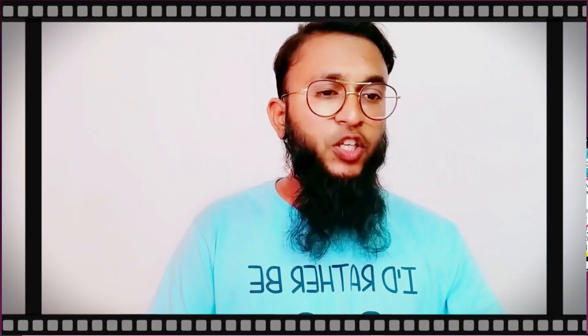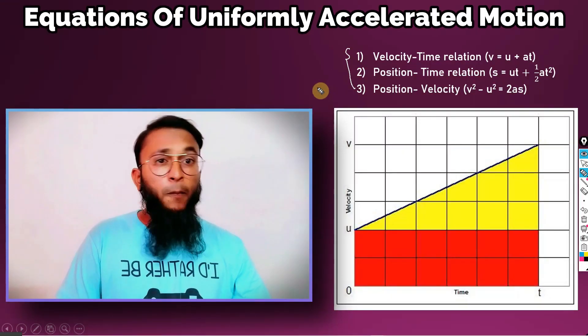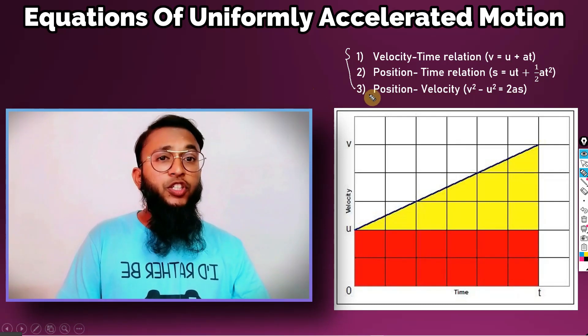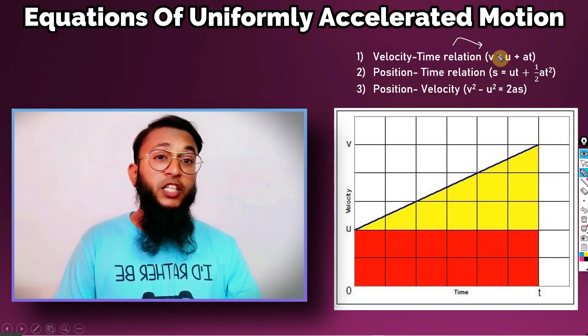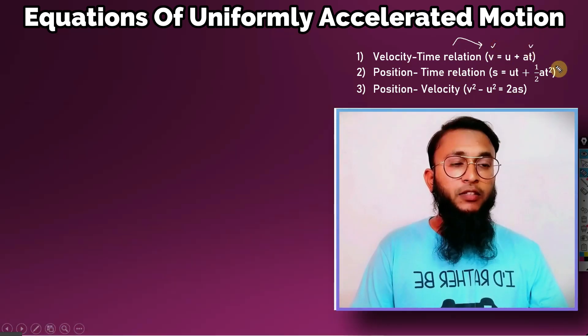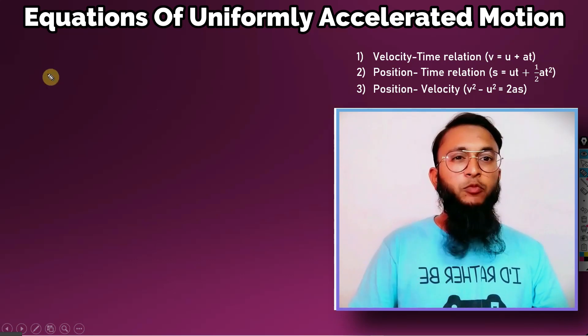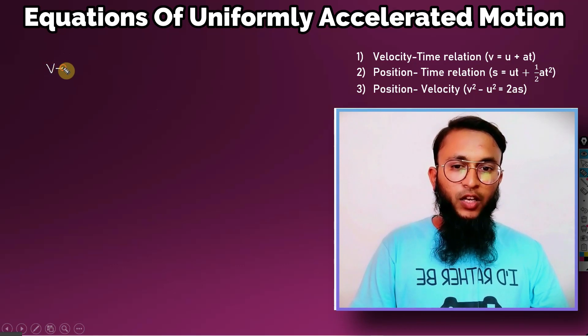Let's have a look at these equations. These equations are velocity-time relation, position-time relation, and position-velocity relation. Here the velocity-time relation is named after the equation in which velocity of the object is mentioned and time as well. So now it's the time to derive the velocity-time relation.